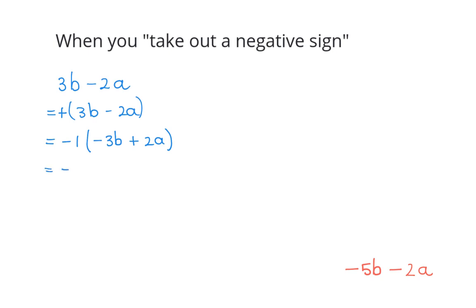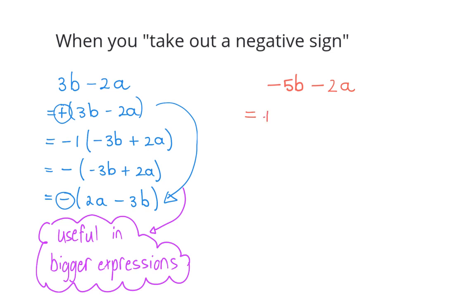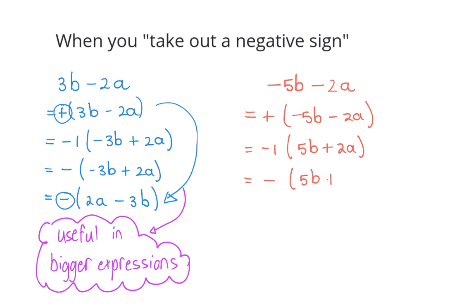We normally don't write the 1 — we just write minus bracket: minus 3b plus 2a. It is sometimes nicer to put the positive term first and the term with the negative sign second. What happened is it looks as if you swapped the terms and the sign changed from plus to minus. In this second example there are two minus terms in the bracket, and you can take out a minus 1, giving plus 5b plus 2a with a minus instead of a plus — so all the signs are positive.